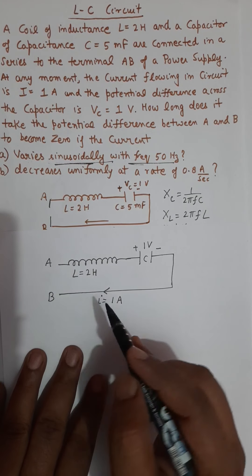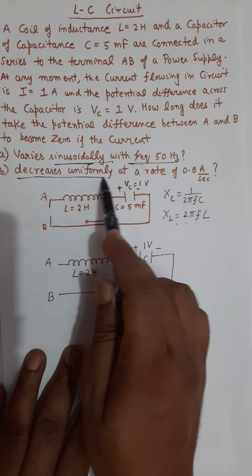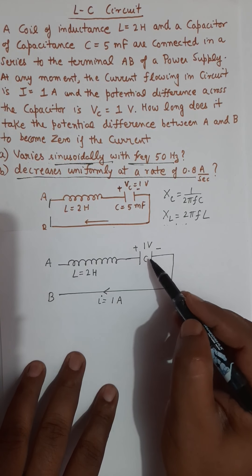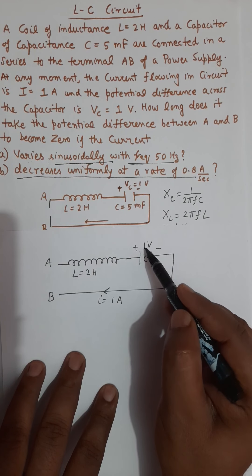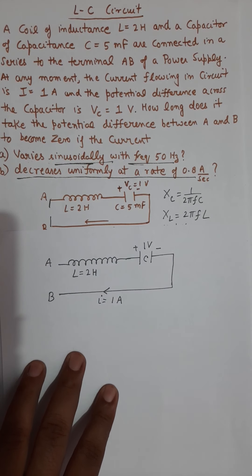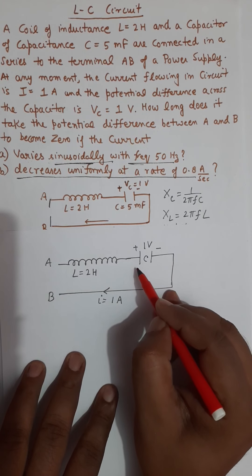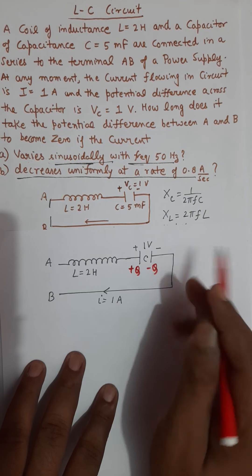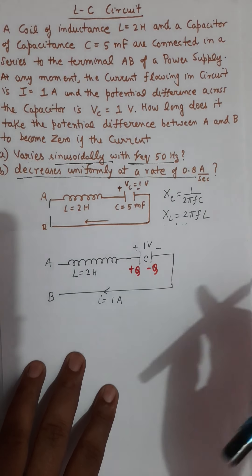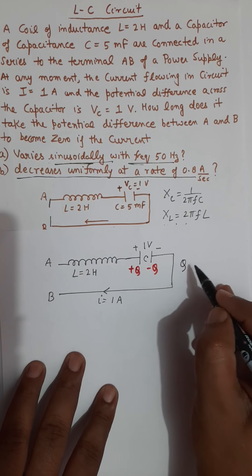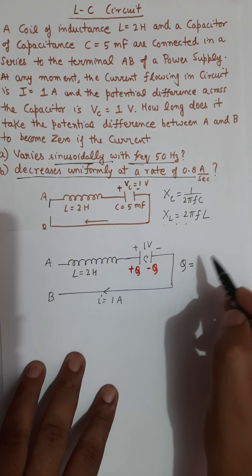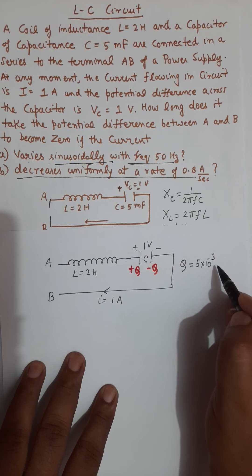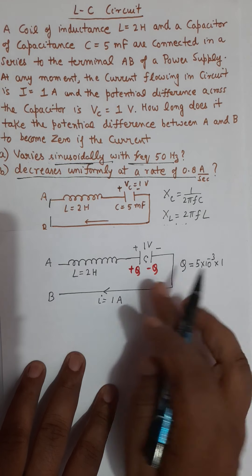Knowing the value of capacitance and knowing the present value of voltage, we can find the present value of charge. Let us say the present value of charge is plus q and minus q. This plus q is the present value of charge, which is capacitance times voltage — that is 5 times 10 to the power minus 3 farads times 1. This is the present value of charge.